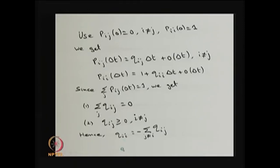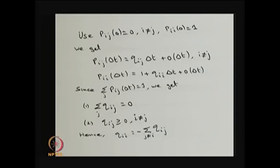Therefore, Qii (the diagonal element) is the negative of the sum of all Qij for j not equal to i. That is, you take the row sum excluding the diagonal term and put a minus sign — that gives the diagonal term, so the total row sum equals 0. The details of the proof can be found in reference books.